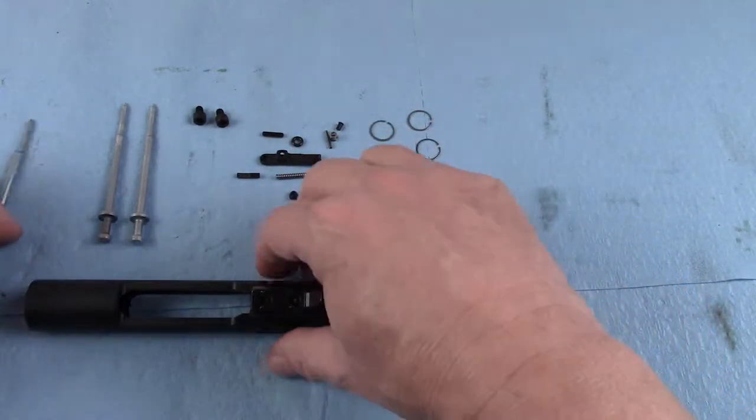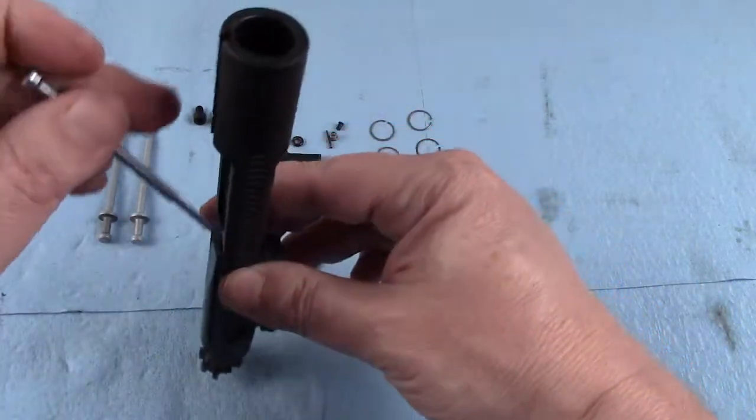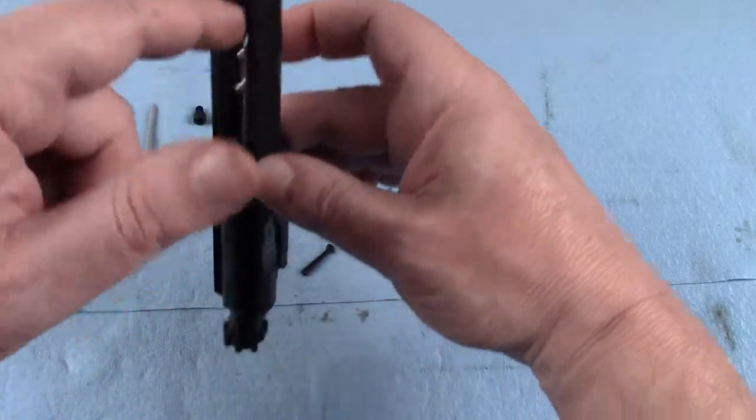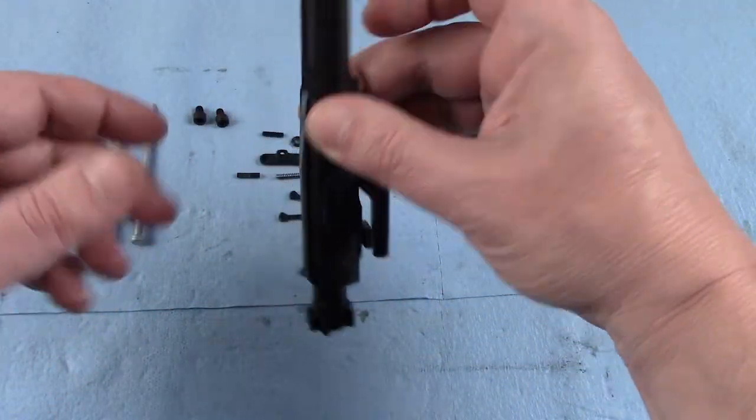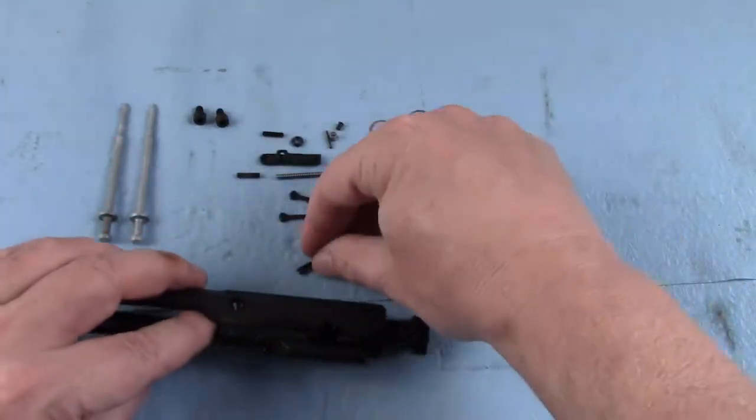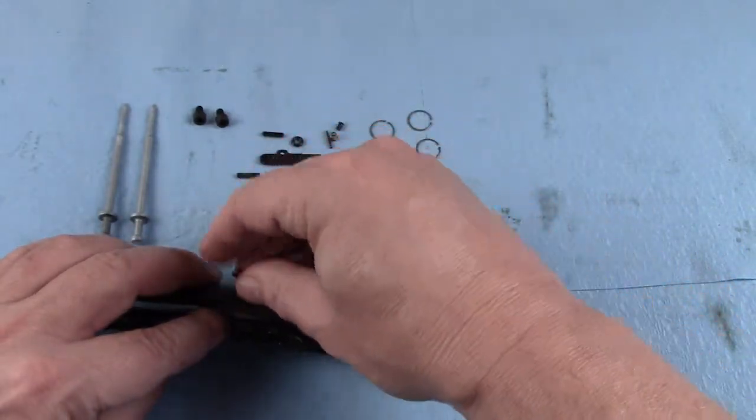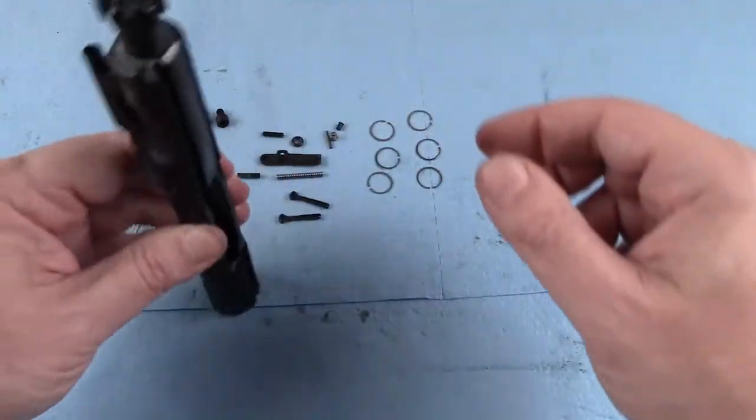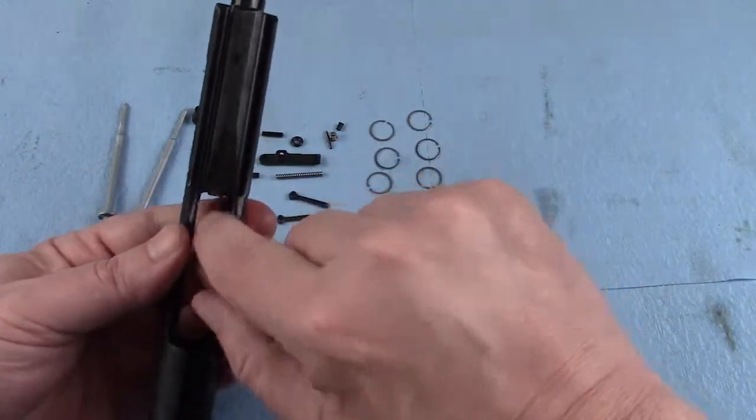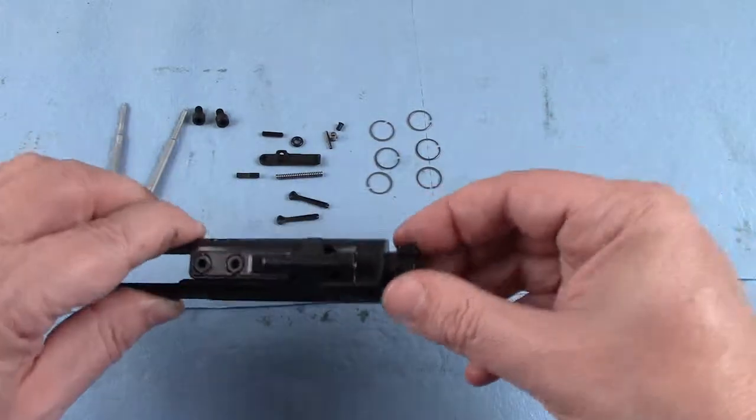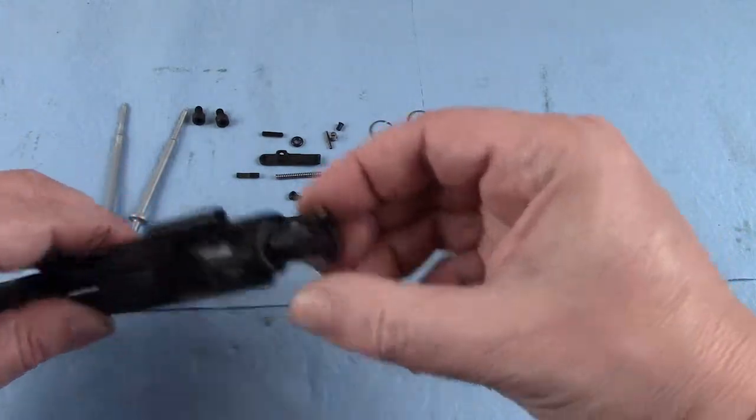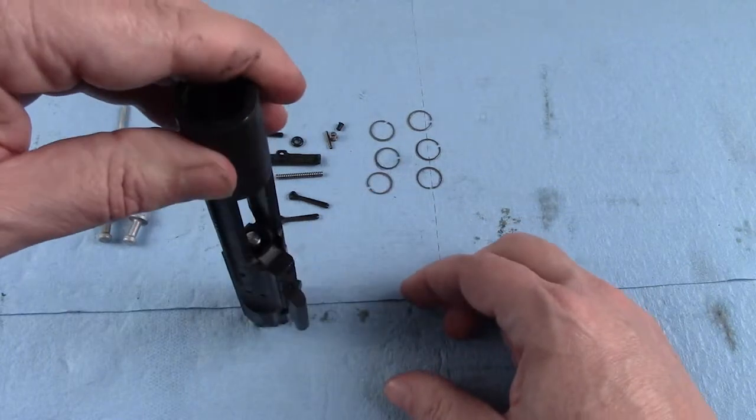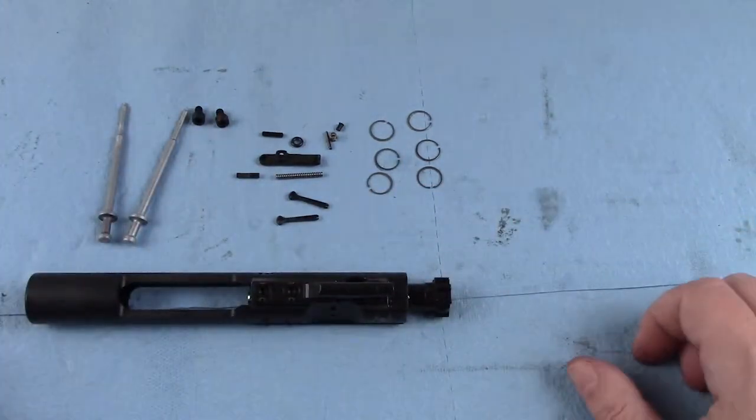We will go ahead and we will reinsert the firing pin. Pretty easy. Get it in all the way like that before you reinsert the key. We get the key back in there. Guess what? Doesn't come out. This rotates just fine. Extractor is in the right place. And basically, we're good to go.